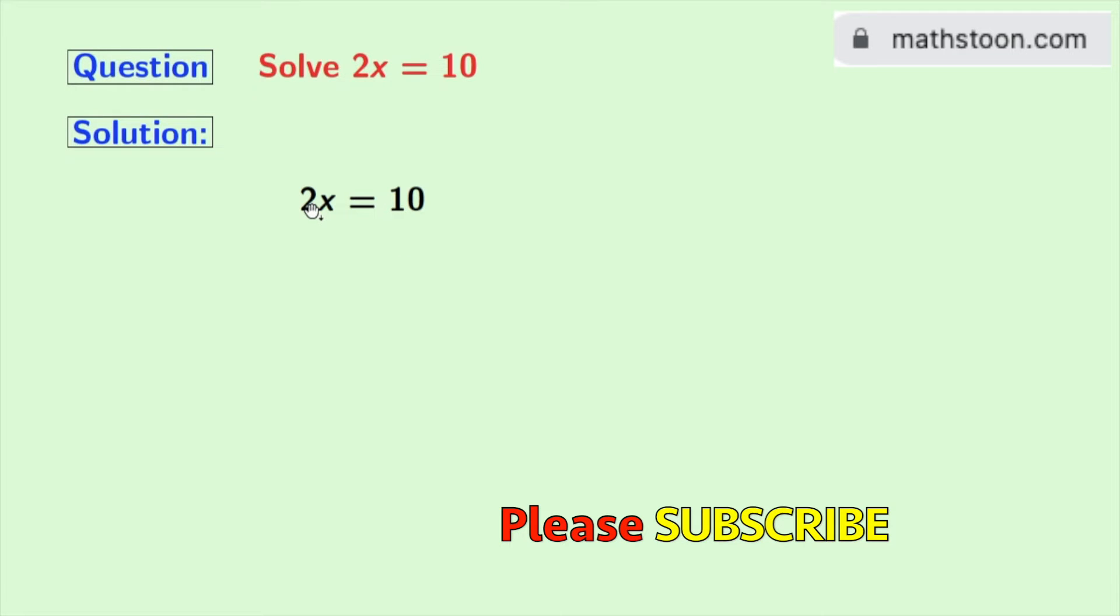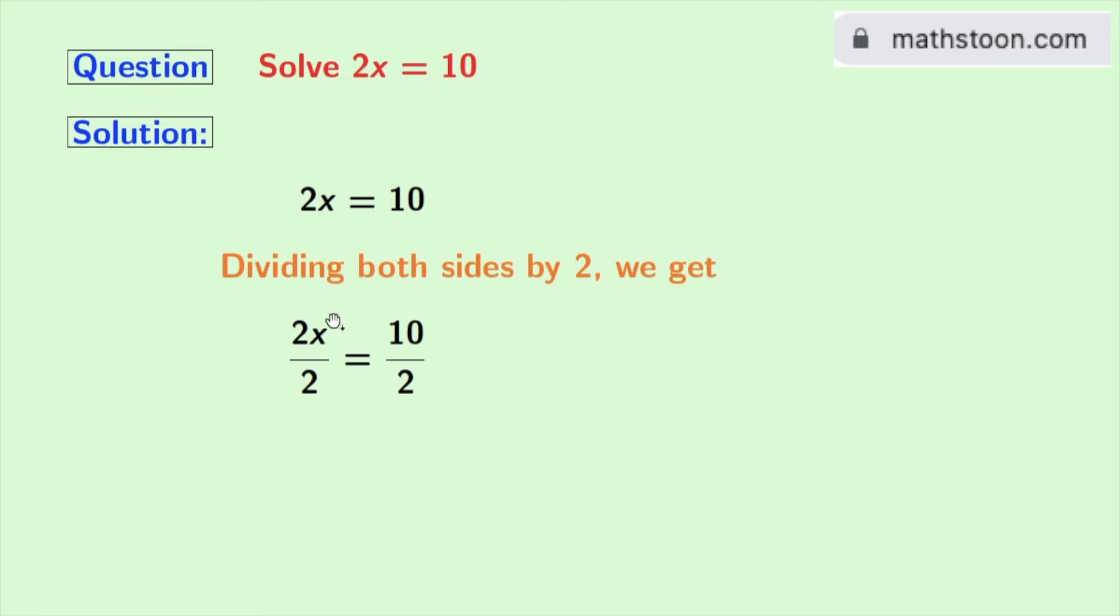So we will divide both sides by 2. Doing so, we get 2x divided by 2 equals 10 divided by 2. Now in the left-hand side, 2 and 2 get cancelled and we are left with x. And as 10 divided by 2 is 5, in the right-hand side we get 5.